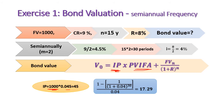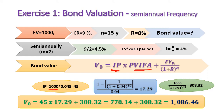Using the semi-annual discount rate of 4% over 30 periods, the PVIFA equals 17.29. The present value of the face value of 1,000 received after 30 periods equals 308 Egyptian pounds. The present value of all coupon payments is 45 times 17.29, equaling 778 Egyptian pounds.